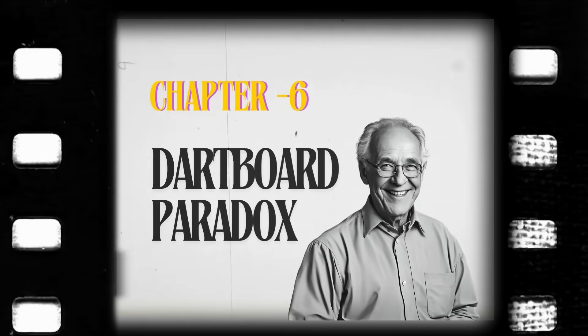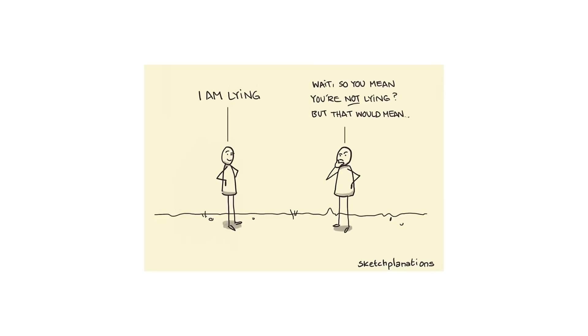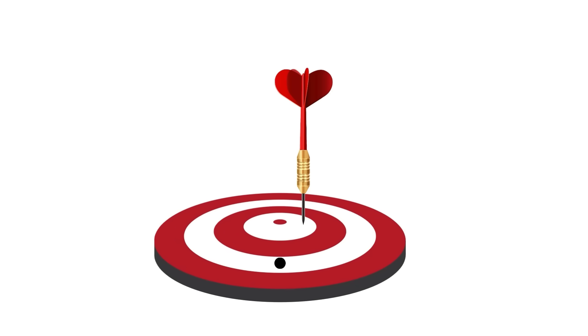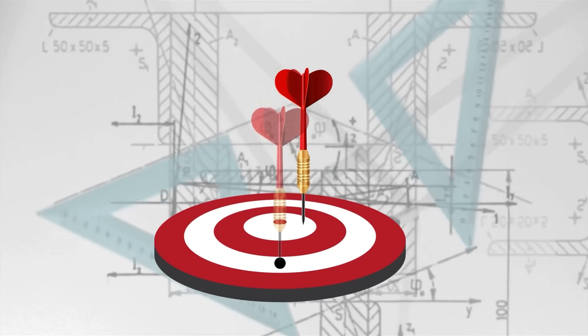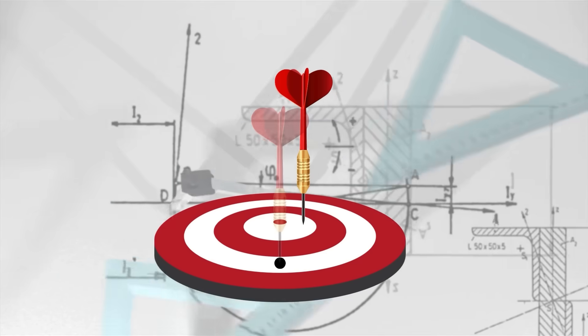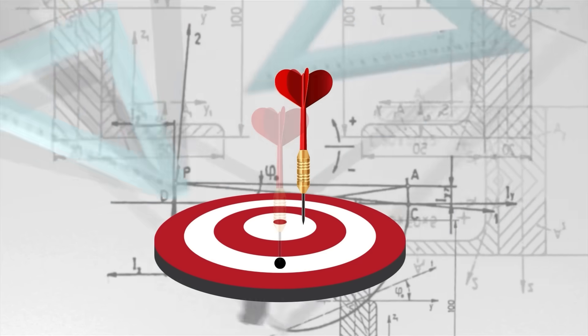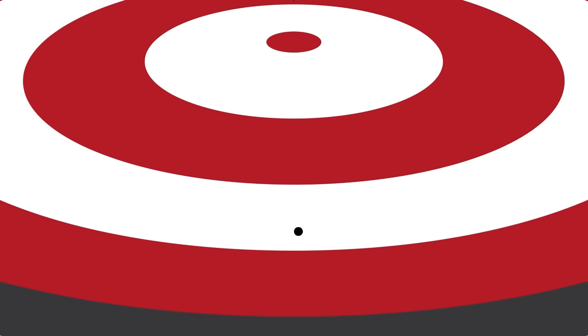Dartboard Paradox. The dartboard paradox is a paradox in probability. Let's say you have a dartboard, and you randomly pick some point on it. Now let's say a dart hits the dartboard at a random point. Is it possible for the dart to exactly hit the point you picked, and if so, what is the probability that this occurs? This is a mathematical scenario, so we will assume that the point is infinitely small. The answer to the first question is obviously yes. The dart can hit any point on the dartboard, after all.